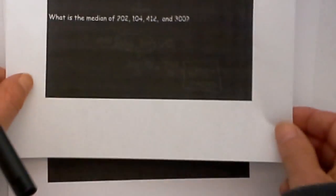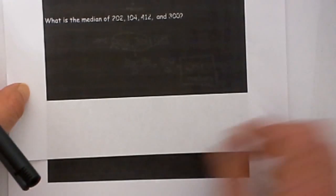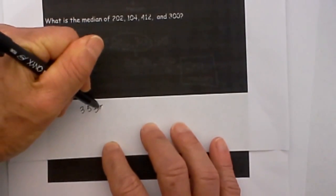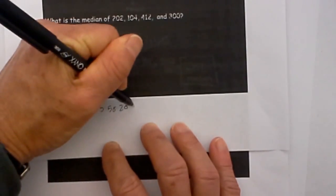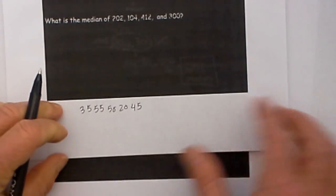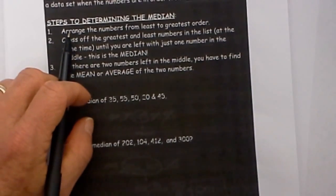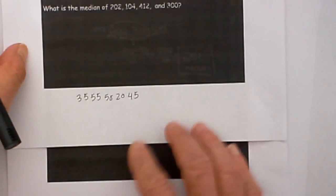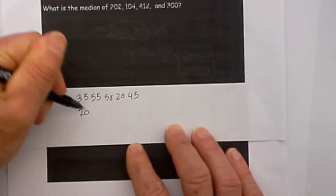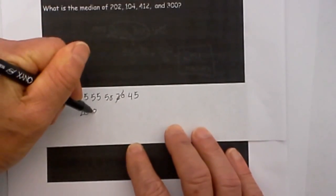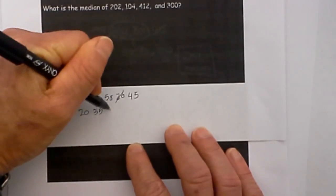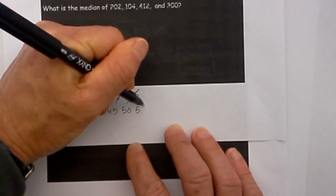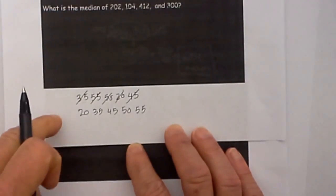Let's work two sets and I will rewrite these. Let's find the median of 35, 55, 50, 20, and 45. Steps first arrange the numbers from least to greatest. I will go ahead and do that. So we have 20, 35, 45, 50, and 55.